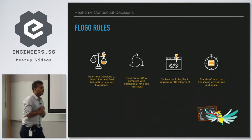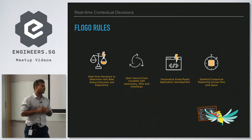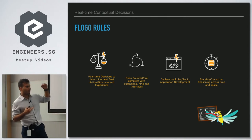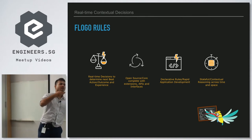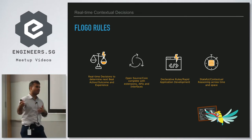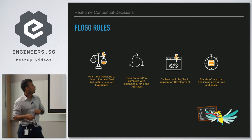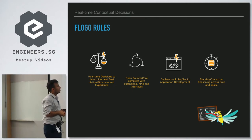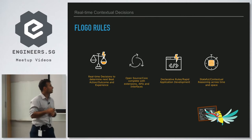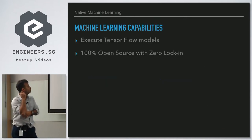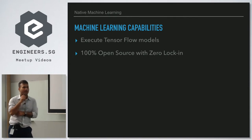FlowGo Rules enables real-time decisions based on conditions. For example, you could create a campaign where, if a male customer spends 10K in a certain area, an offer is sent to him. That kind of real-time decision can be made using FlowGo Rules. It's open source, fully extensible with APIs and interfaces, supports declarative rules, rapid application development, and stateful contextual reasoning across time and space.